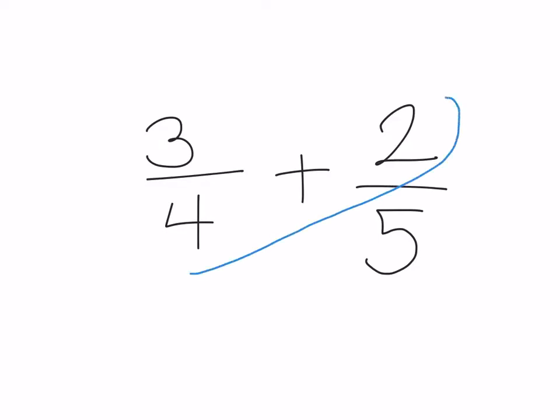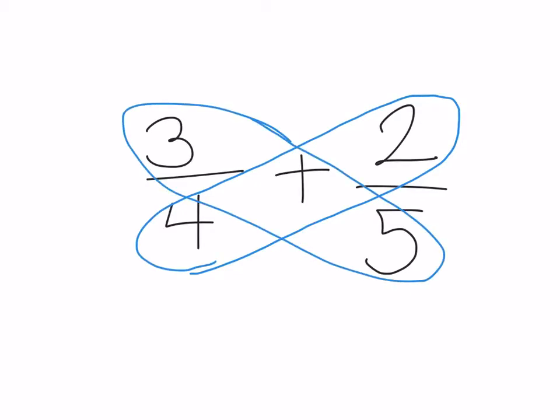For example, when trying to add 3 over 4 plus 2 over 5, what you would do first is multiply the numerator of one and the denominator of the other in a diagonal like this for each side. And this would create the body of the butterfly.